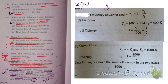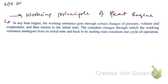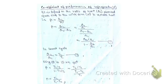In question 2c there is another part: write down the working principle of a heat engine and obtain the coefficient of performance of a refrigerator. Here is the working principle of the heat engine, and next is the coefficient of performance of a refrigerator. This is the complete answer to question 2c.